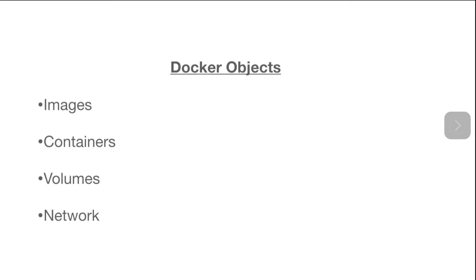Now let's see a few other Docker objects. We have interacted with three of them in the previous videos. Some of the important Docker objects are Docker images, Docker containers, volumes, and networks.